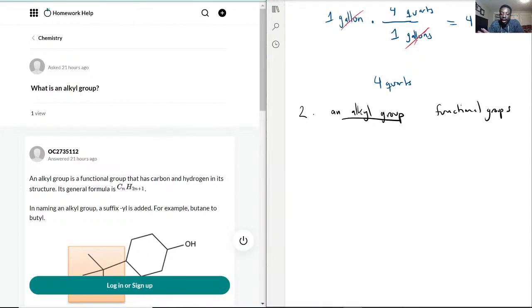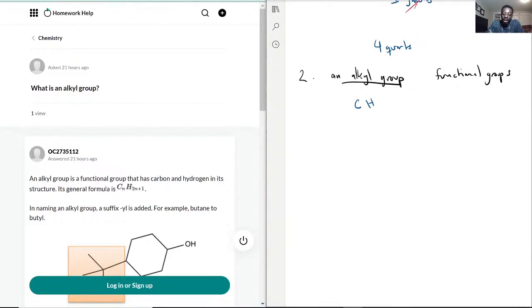But alkyl groups only focus on carbon and hydrogen chains, so it's kind of like an extra chain that sticks out. So let's say for example we had a benzene ring.